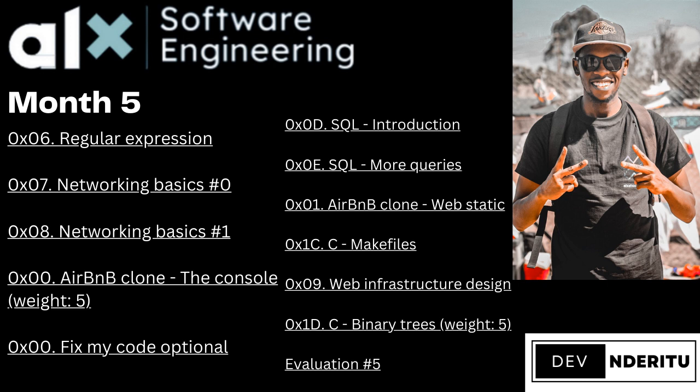In this video I'll be talking about month five, the final month in Sprint Two. We started off with regular expressions, which we implement in Ruby, then you have DevOps networking basics — that's networking basics zero and one.